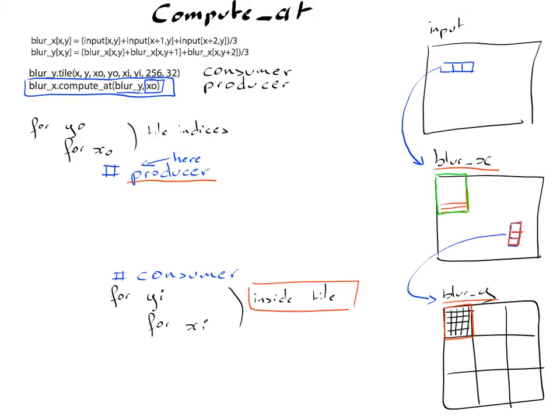I've decided that I need this rectangle of blur x, and all I need to do is to insert loops that generate this data.